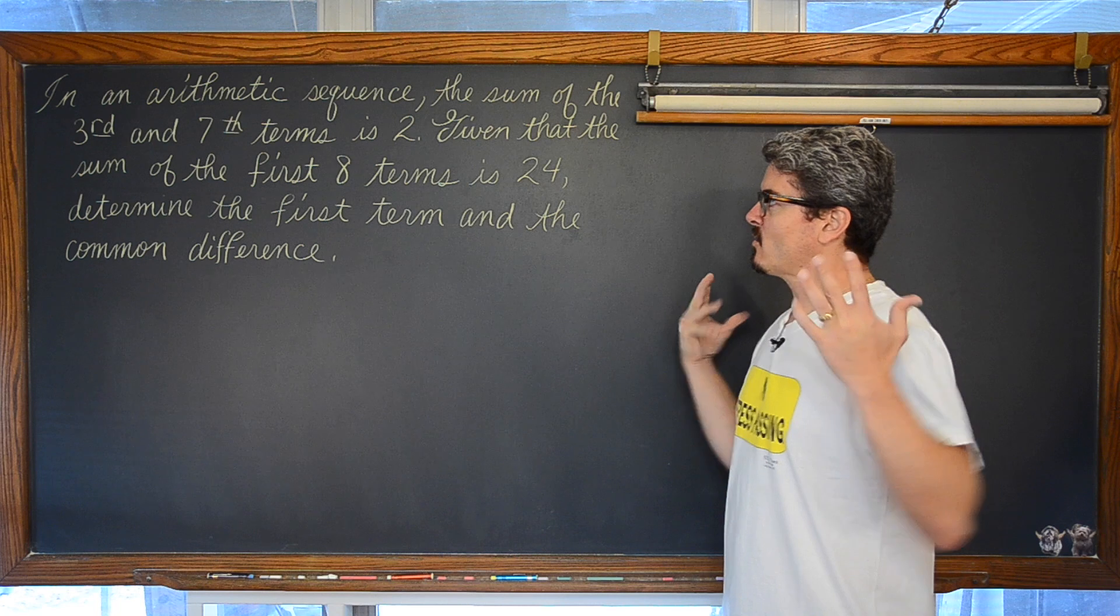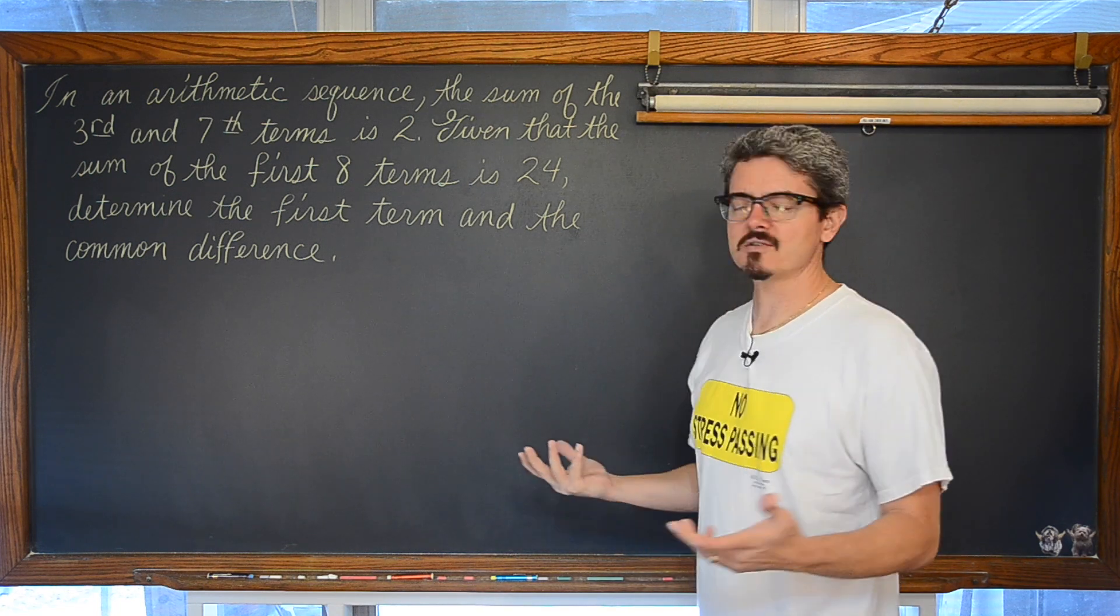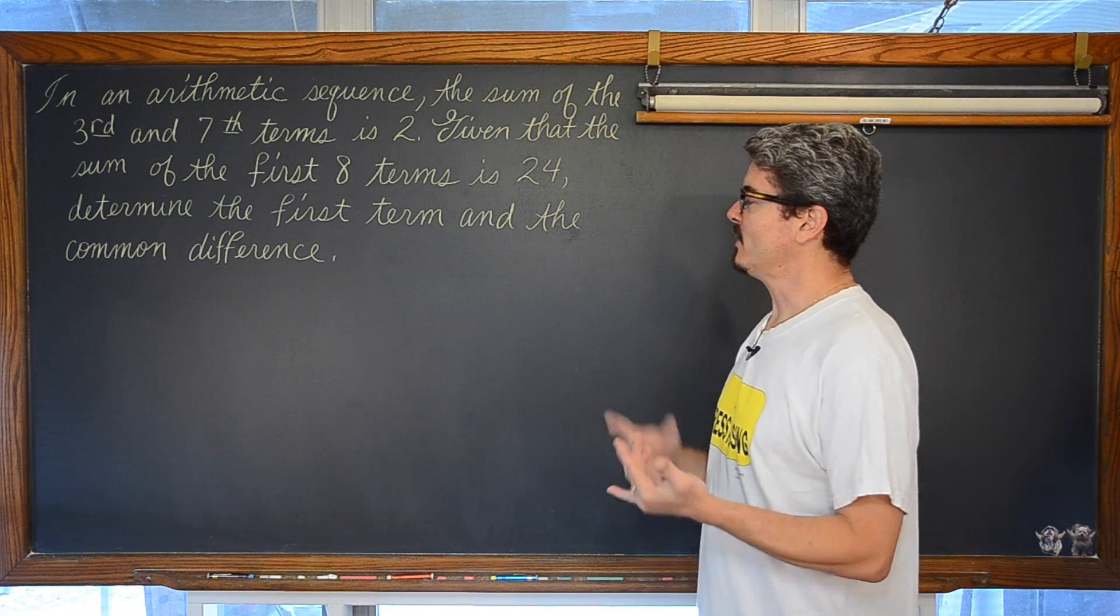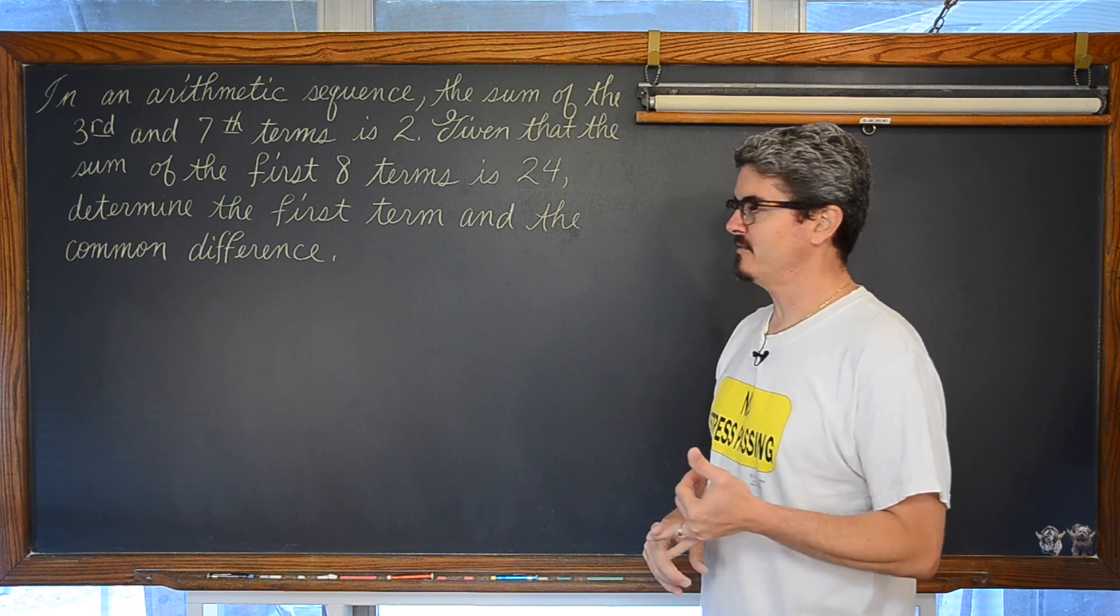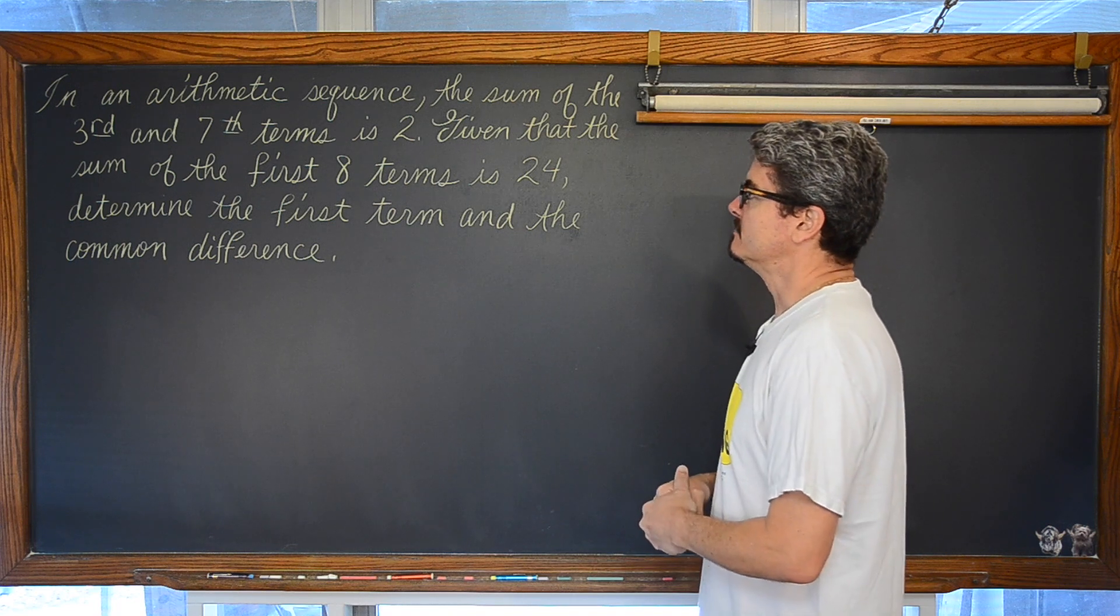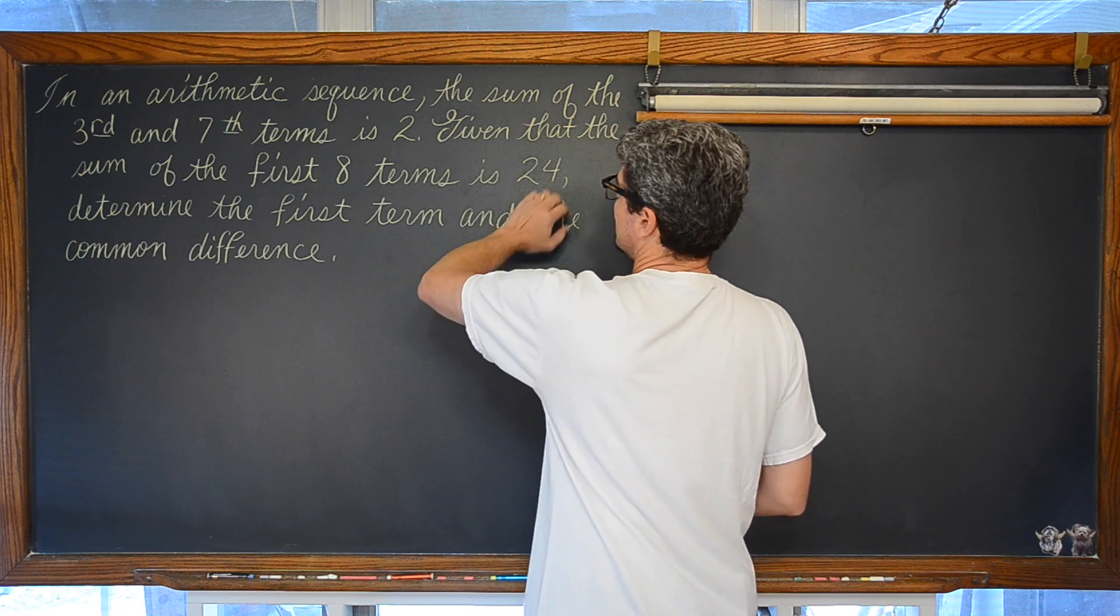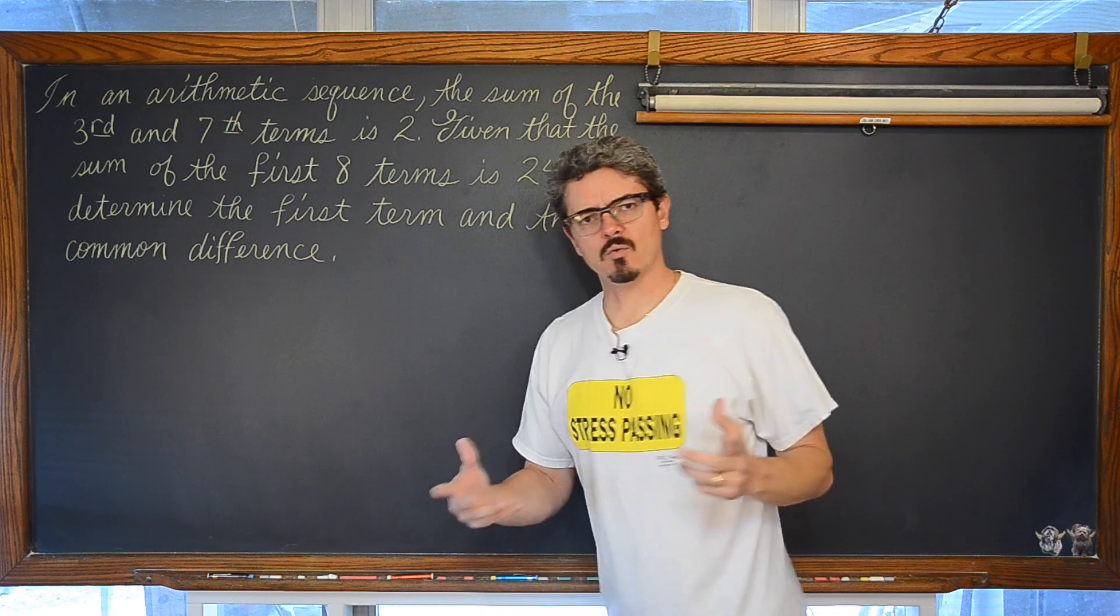And given the sum of the first eight terms is 24, determine the first term and the common difference. How often do you see questions about arithmetic and geometric sequences where they don't hardly tell you anything? We don't know a common difference. We don't have even any specific terms to build off of. We just know that the sum of the third and the seventh is two and the sum of the first eight is 24.